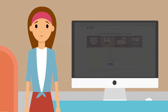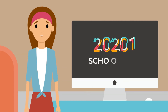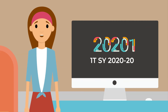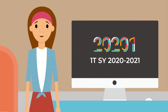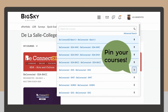The tag used for courses is the school year and the term number, like 20201 for the first term of school year 2020-2021. Once found, please pin your courses to your Big Sky My Courses page.